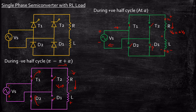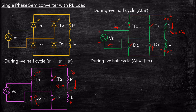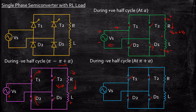This is considering T2 is not triggered, that is between pi and pi plus alpha. Freewheeling action takes place and the energy stored in the inductor is discharged through this path. Now what happens during negative half cycle at pi plus alpha? Again considering the circuit at pi plus alpha, the supply voltage will still be negative and positive, and assuming the inductor has discharged some amount of energy through the resistor — that is freewheeling action has already taken place.